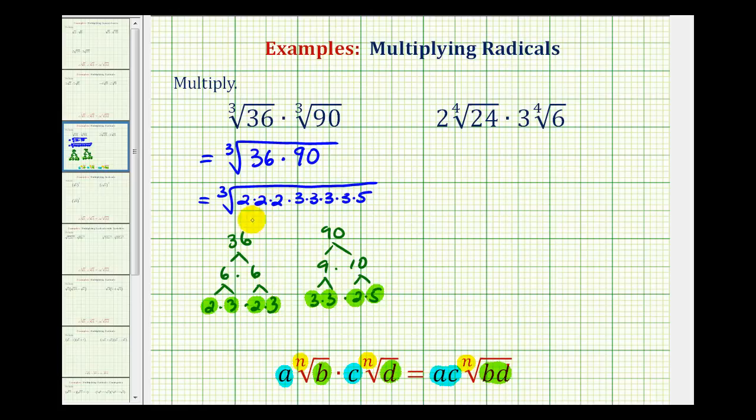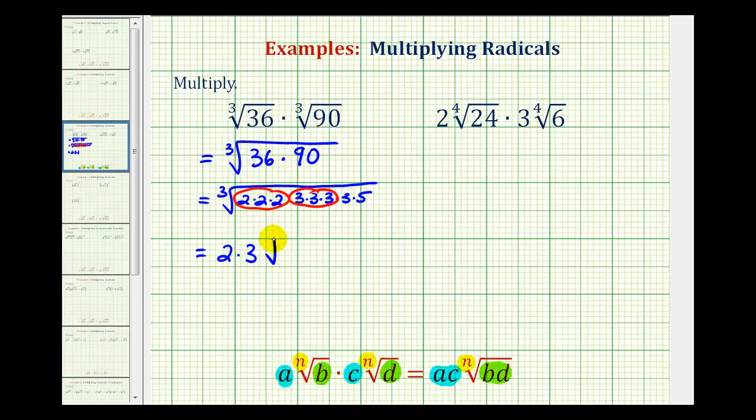And now that we have the prime factorization of this product, we can easily identify the perfect cube factors, which will simplify. Here we have 3 factors of 2, and here we have 3 factors of 3. The circled part will simplify, the part not circled will not simplify. So we'll have a factor of 2 outside the cube root, and a factor of 3, and then we'll still have the cube root of 3 times 5, which is 15. And since 2 times 3 is equal to 6, we have 6 times the cube root of 15.